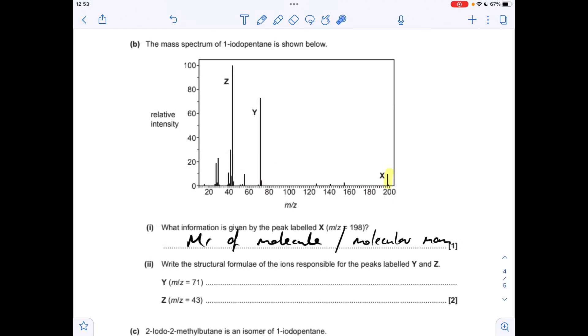Part B, so what information is given by the peak labelled X, so this is the peak furthest to the right, it's known as the molecular ion peak, and it gives you the MR of the molecule. And to help with the next part, I've drawn up the structural formula for the molecular ion peak before it fragments.